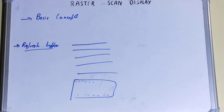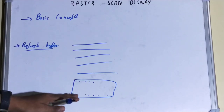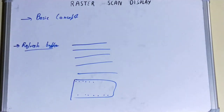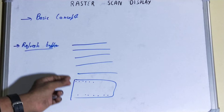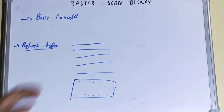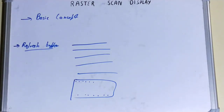The stored intensity values are then retrieved from the refresh buffer and painted on the screen one at a time. So the electron beam takes the help of the refresh buffer for setting the intensity value of each particular pixel.